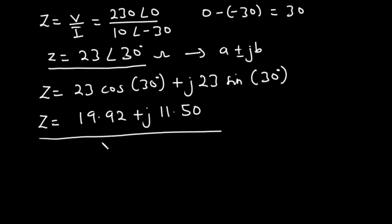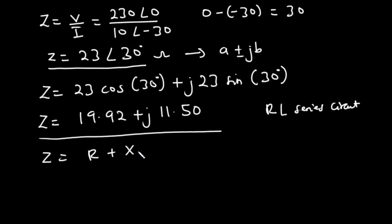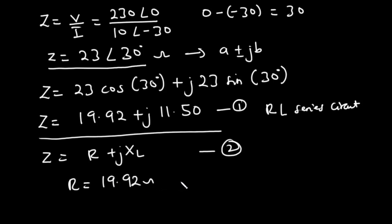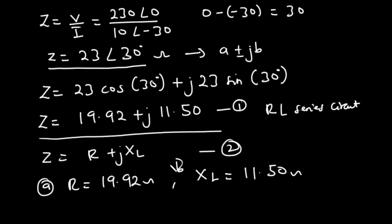This is the rectangular form of the impedance. Because we have an RL series circuit, the impedance is given by R plus JXL. Comparing the two equations, we have R, the resistance, equals 19.92 ohms, and the inductive reactance equals 11.50 ohms. This is the answer for A and this is the answer for B.